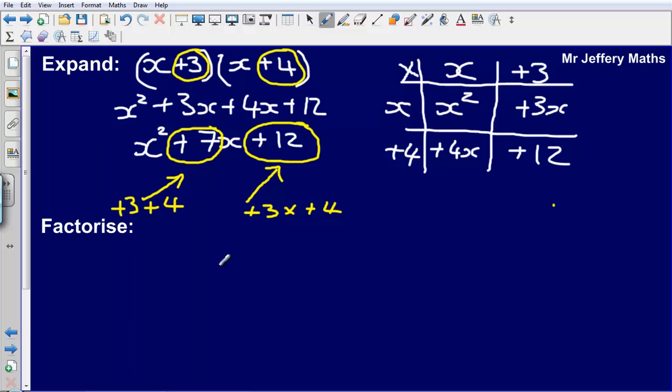And so if we were to factorise this expression, say we were to factorise x squared plus 7x plus 12, now we know straight away that our answer is going to be x plus 3 bracket x plus 4.